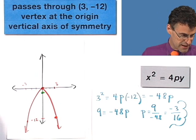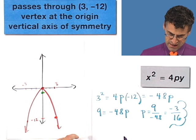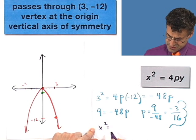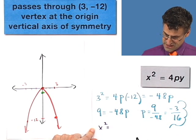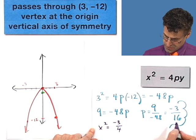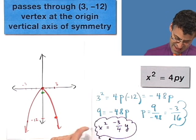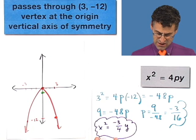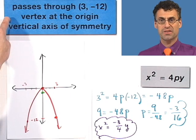And if I put that in to the equation, I see that x squared equals, well, 4 times negative 3 sixteenths, which is negative 3 fourths, after I cancel the 4 and the 16, y.